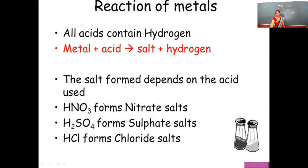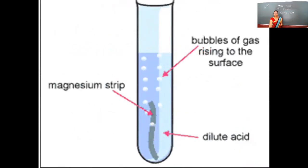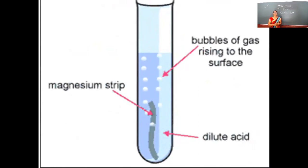The salt formed depends on the acid used. If you are using nitric acid, the nitrate salt forms. If you are using sulfuric acid, the sulfate salt forms. If you are using hydrochloric acid, the chloride salt forms. The anion part of the acid will join with the metal.